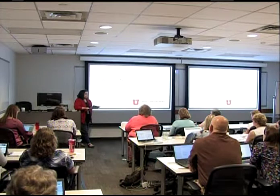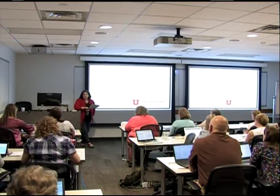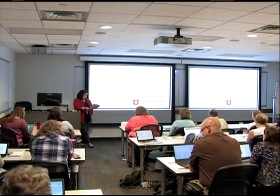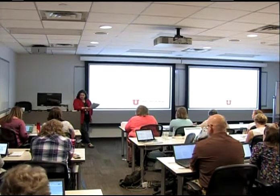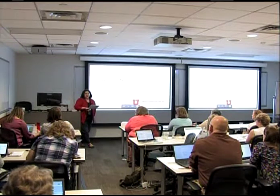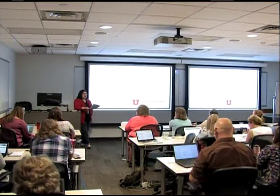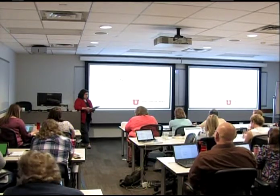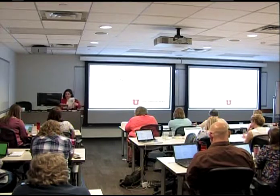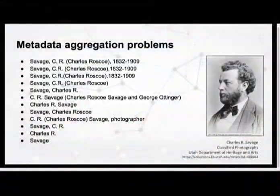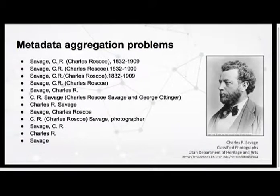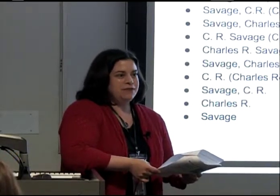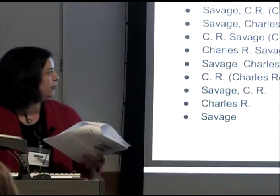What I'm going to talk about is the Western Name Authority File. This is a grant-funded project where we received a grant from IMLS to pilot a system for developing a regional authority file — meaning things containing authority records, or information about names and corporate bodies that we might find in our digital collections. As anybody knows who's worked on large-scale digitization projects, as your metadata gets aggregated, mistakes emerge even more than you might see in just a local collection or a local repository.